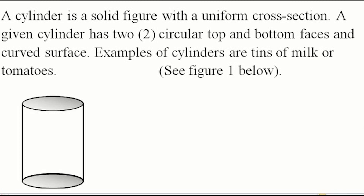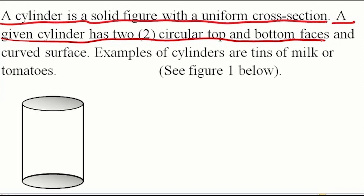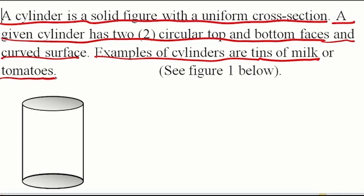What is a cylinder? How do you describe a cylinder? A cylinder is a solid figure with a uniform cross-section. A given cylinder has two circular top and bottom faces and a curved surface. Examples of cylinders are tins of milk or tomatoes. See figure 1 below.